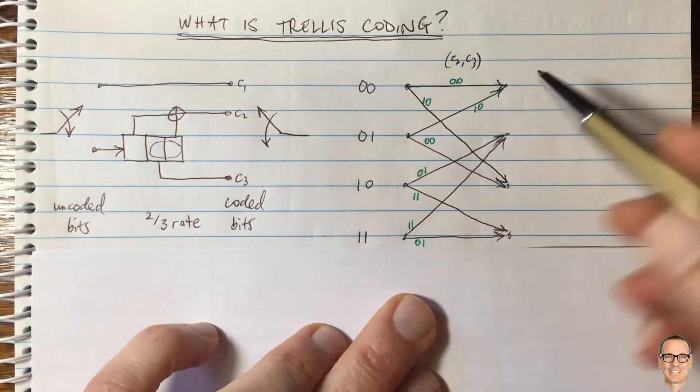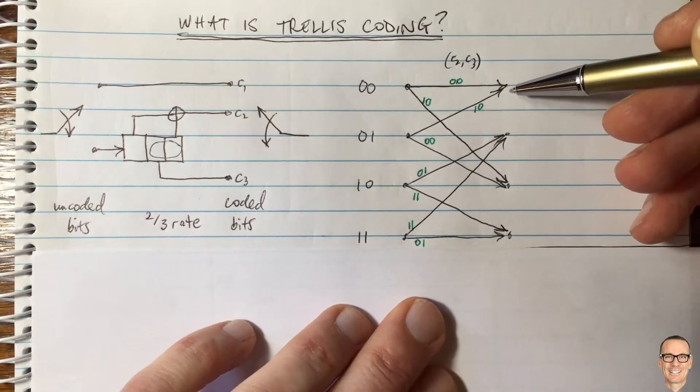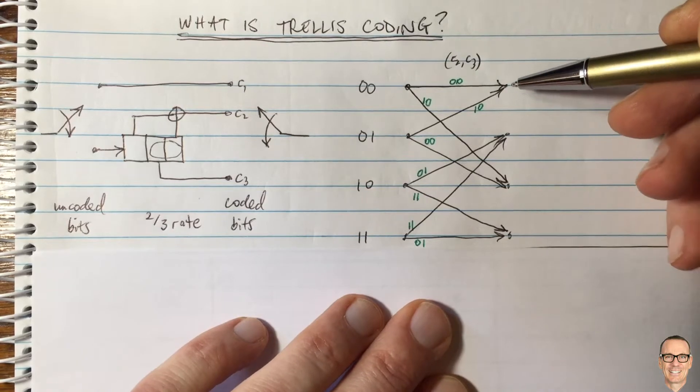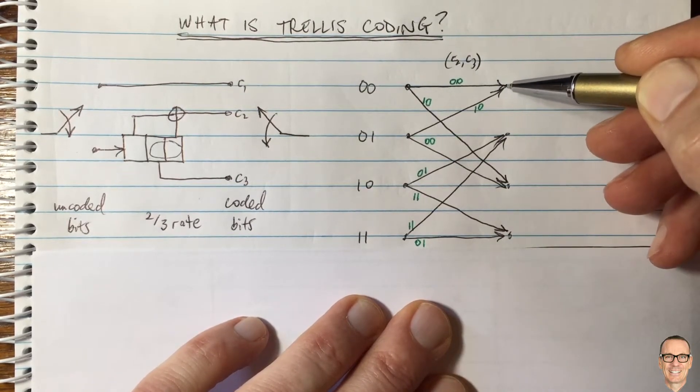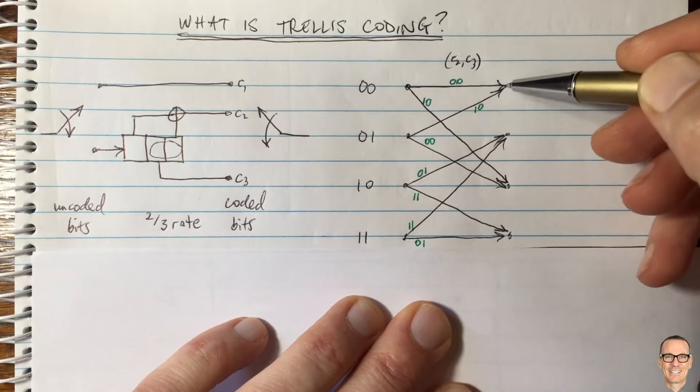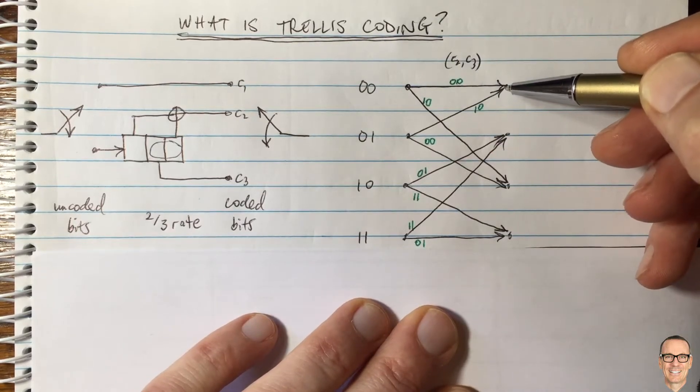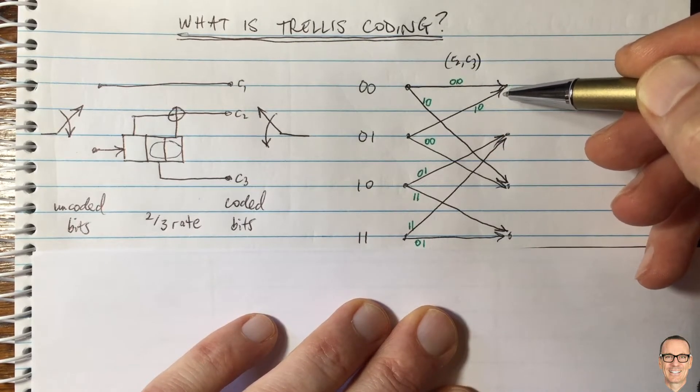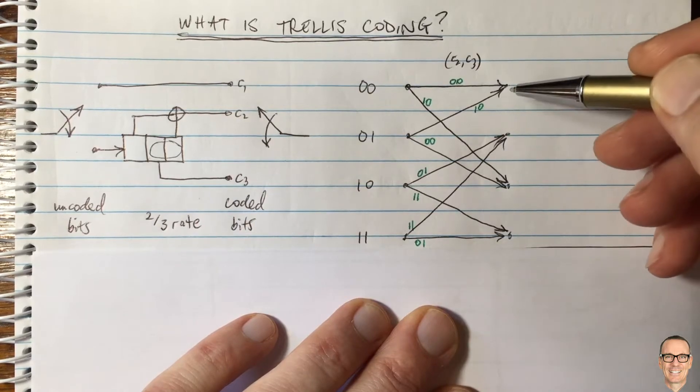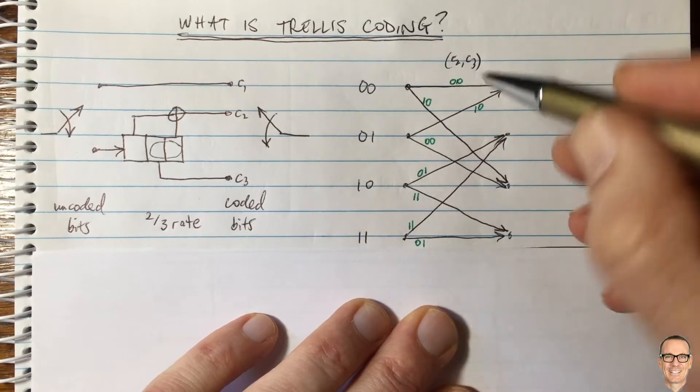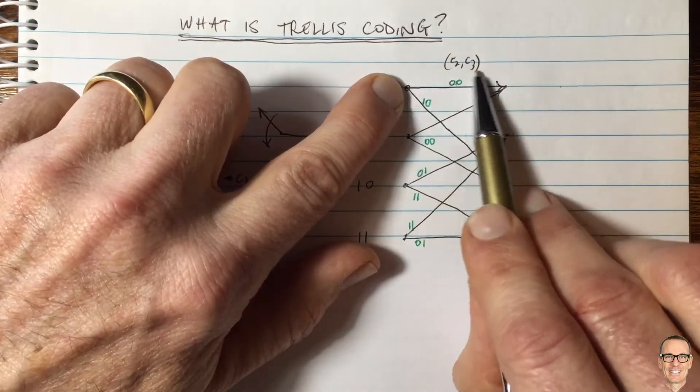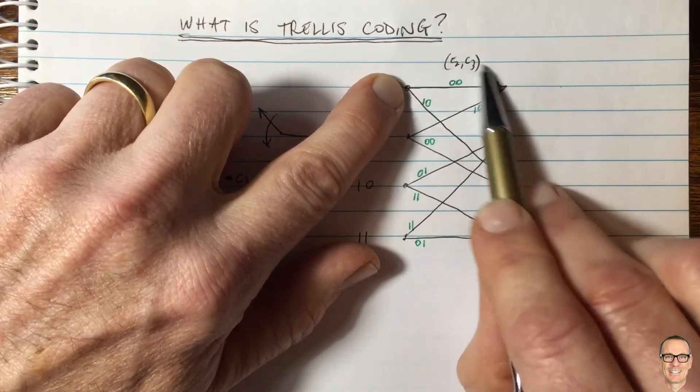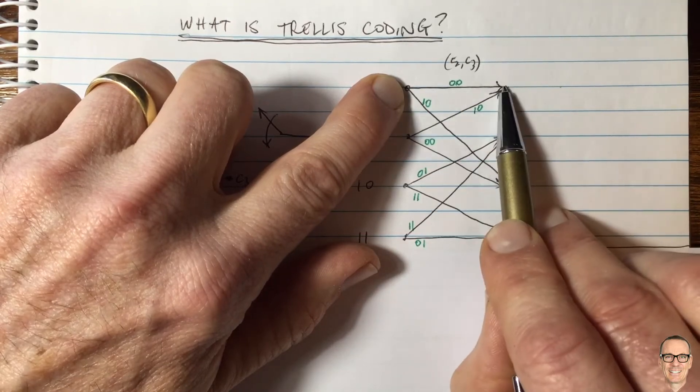And so now let's think of making decisions in the Viterbi decoder. And if you're not familiar with that process there's a video in the link below on Viterbi decoding. You need to look at the shortest paths and those shortest paths are going to be the ones that make most effect on the decision making. And so for every one of these branches there's another parallel branch, then they are the shortest differentiated paths.